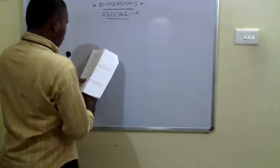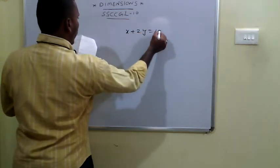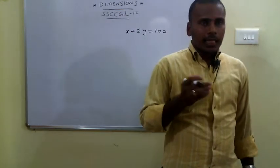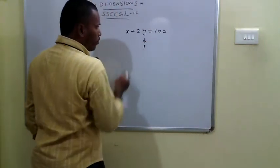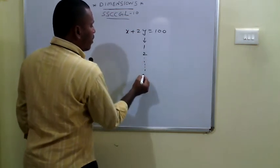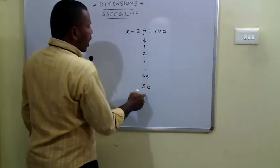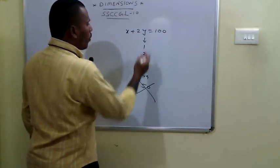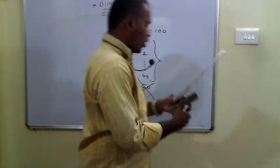The 67th problem: find the number of ordered pairs of positive integers satisfying x + 2y = 100. For y = 1, x = 98; for y = 2, x = 96; and so on. When y = 49, x = 2. When y = 50, x = 0, which is not a positive integer. So the possible values of y are 1 to 49, giving 49 solutions.